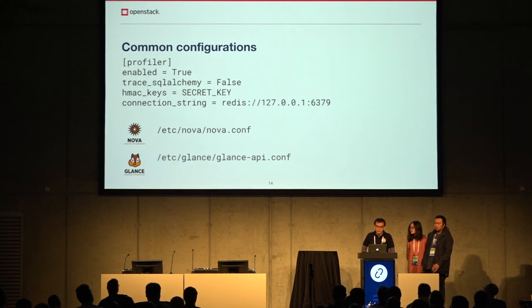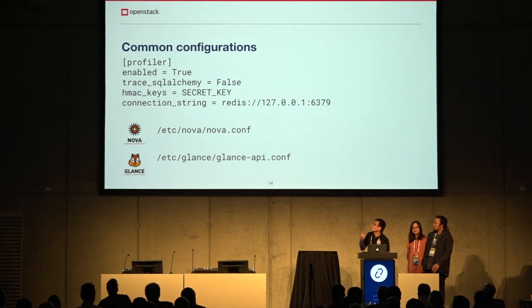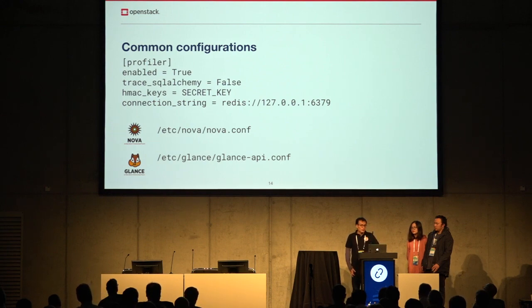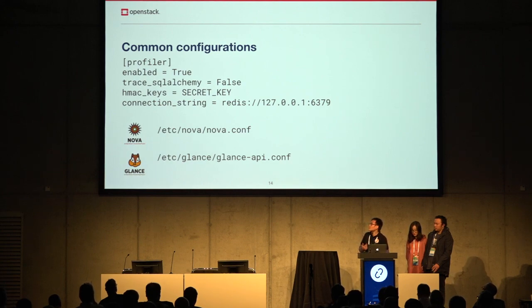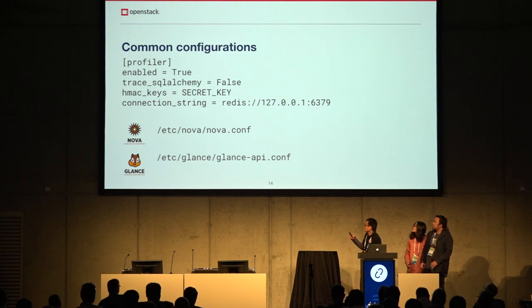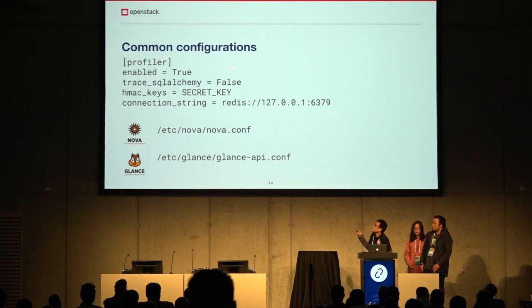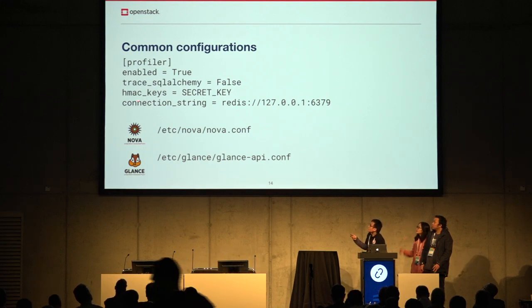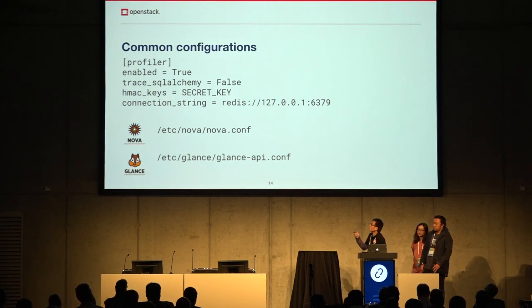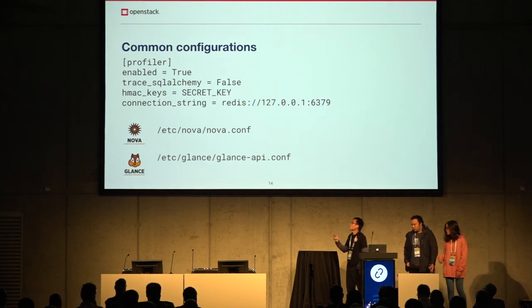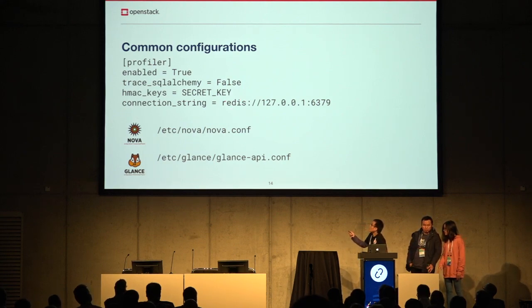For configuration, if you want to enable OS profiler in your OpenStack service, add this section to your service configuration. Set 'enabled' to mark that OS profiler is enabled. If you want to trace SQL Alchemy code, you can enable it — by default it is disabled because it generates a lot of traces. The HMAC key identifies which client is calling your OpenStack service. The connection string specifies which driver backend we want to store the trace in — in this case, Redis.